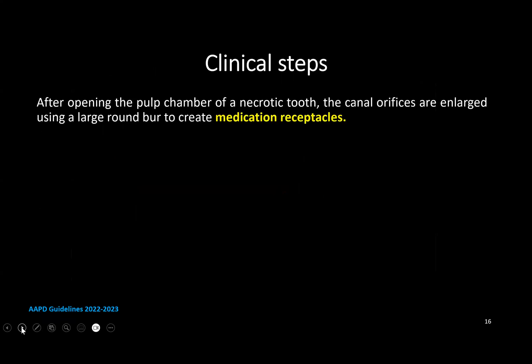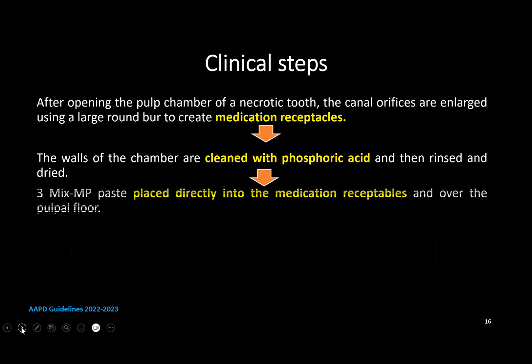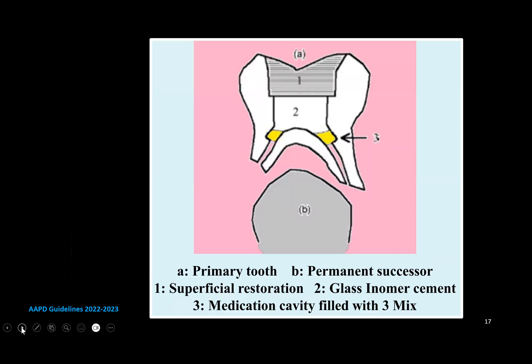The clinical steps of the procedure: after opening the pulp chamber of the necrotic tissue, the canal orifices are enlarged using a large round bur to create a medication receptacle. The walls of the chamber are cleaned with phosphoric acid, then rinsed and dried. The three-mix MP paste is placed directly into the medication receptacle and over the pulpal floor. It is then covered with glass ionomer cement and restored with a stainless steel crown.